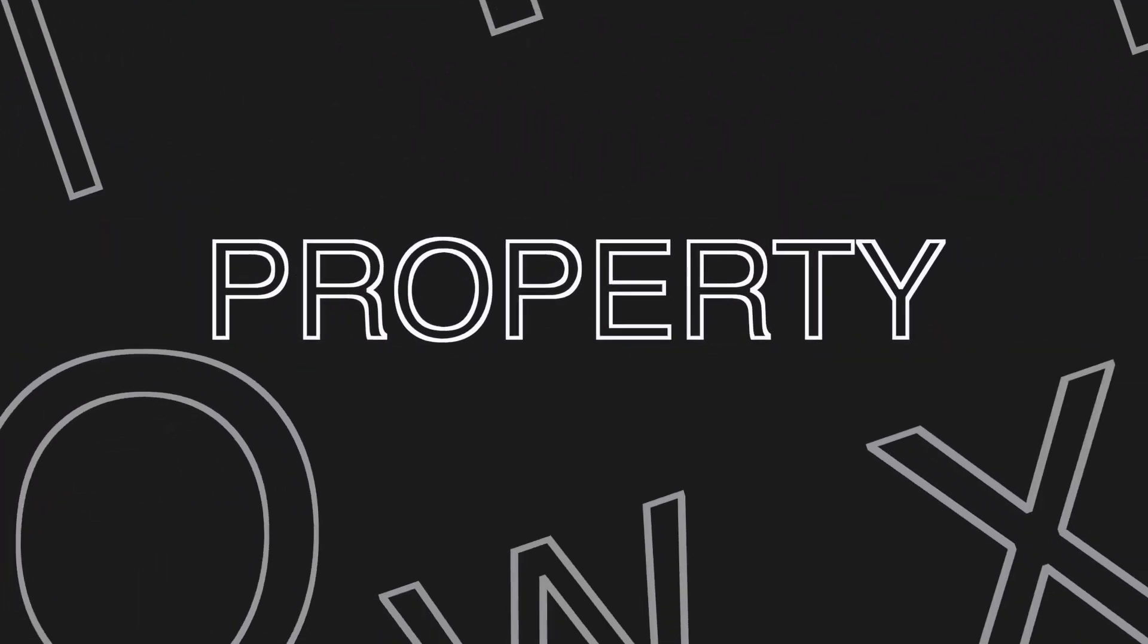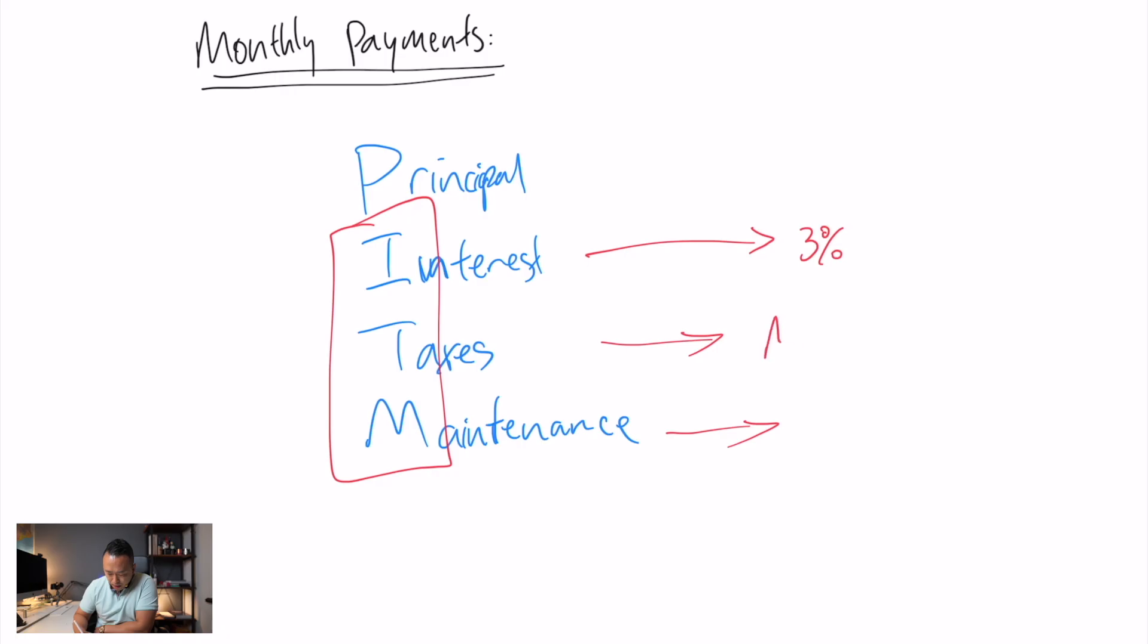The taxes, how that actually works is MPAC, which is the Municipal Property Assessment Corporation. They assess your property and it generally takes about one to two years to get an assessment. They multiply that times the rate. It's the assessed value times your rate. I'm so bad at writing right now.